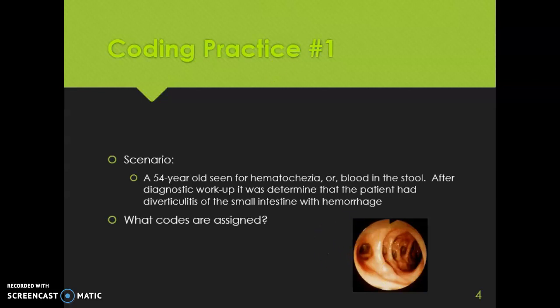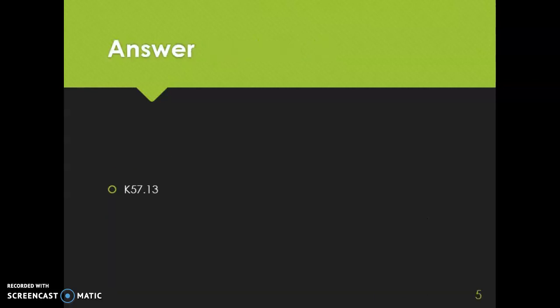First, look up diverticulitis in the alphabetical index. Go to D, diverticulitis, then intestine, then small. Because our documentation says with hemorrhage, we pick with bleeding, and our code is K57.13. Verify that code in the tabular list and make sure there are no special inclusion or exclusion notes. There are none, so the correct code is K57.13.